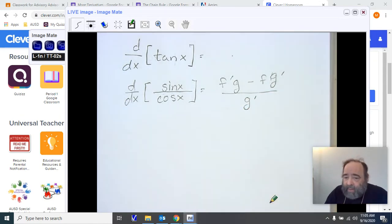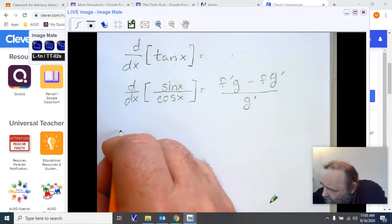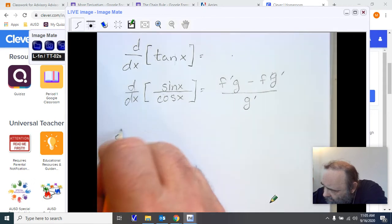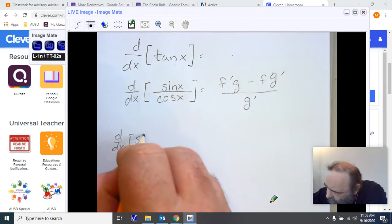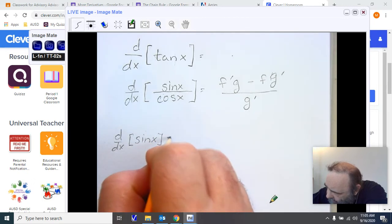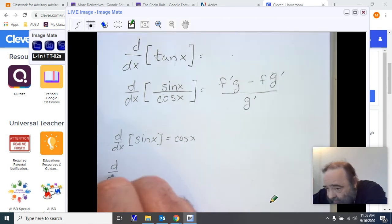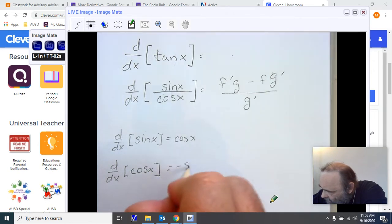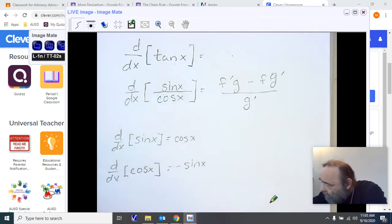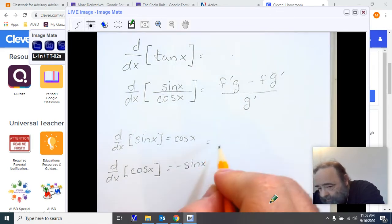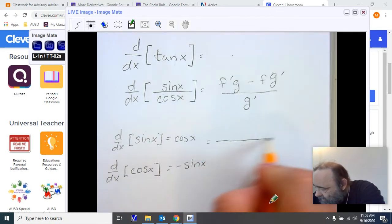Now, once I've got this, I want to make sure that I find the derivative of my numerator and my denominator. We know that the derivative for sine is cosine. We saw that just the other day. And we also saw at that same time that the derivative of cosine is negative sine. So if I now start substituting my pieces in place,